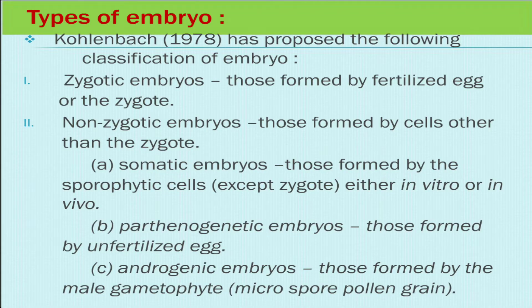Regarding different types of embryos, Kohalan Bech in 1978 proposed the following classification. Embryos have two types: zygotic embryos, those formed by the fertilized egg or zygote; and non-zygotic embryos, those formed by a cell other than the zygote. Non-zygotic embryos are further classified into somatic embryos, parthenogenic embryos, and androgenic embryos.